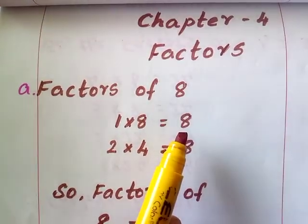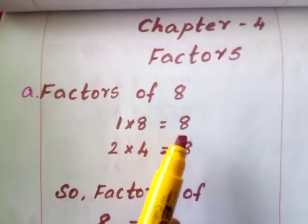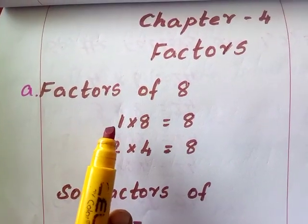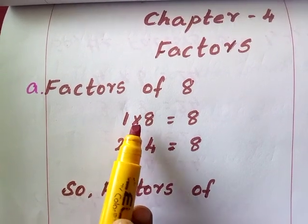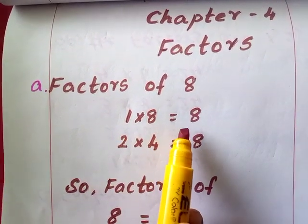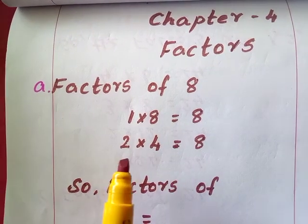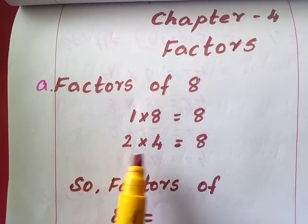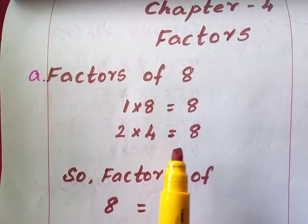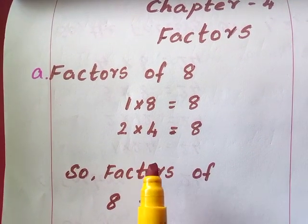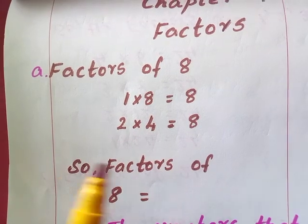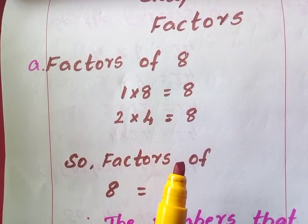So one by one you can check the tables. First we start from the ones table. 1 into 8 we get 8. So that multiplication statement I have written here. When we check the table of 2, it is 2 into 4 that we get 8. And when we see the third table, we don't have 8 in the third table. And 4, 5 etc. if you go, there is no 8.